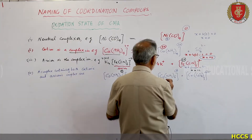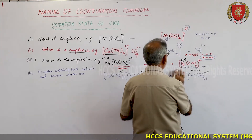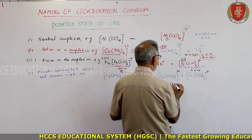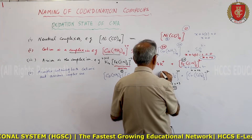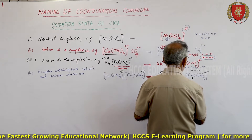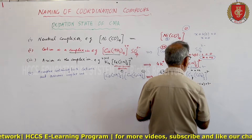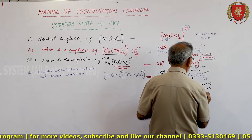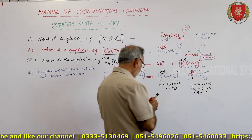For [Co(NH3)6][Cr(C2O4)3]: the Co complex is 3+ so x + 6×0 = +3, giving Co a +3 oxidation state. For the Cr complex which is 3−: y + 3×(−2) = −3, so y − 6 = −3, giving Cr a +3 oxidation state.